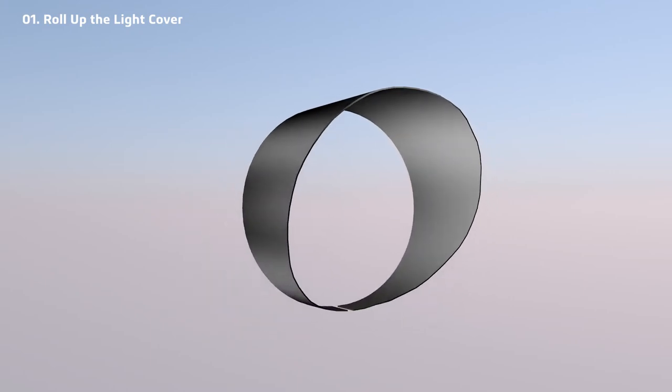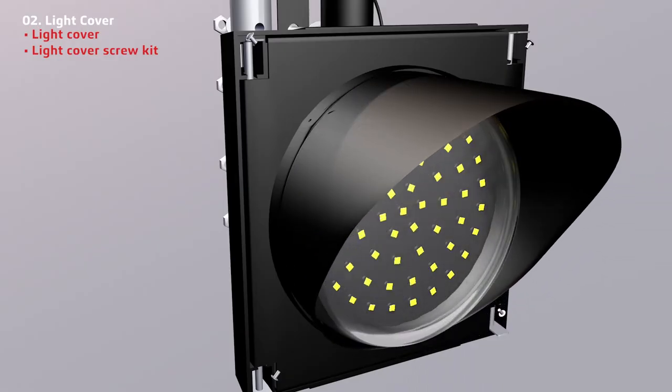First, roll up the light cover. Use the light cover screw kit to secure the cover to the light.